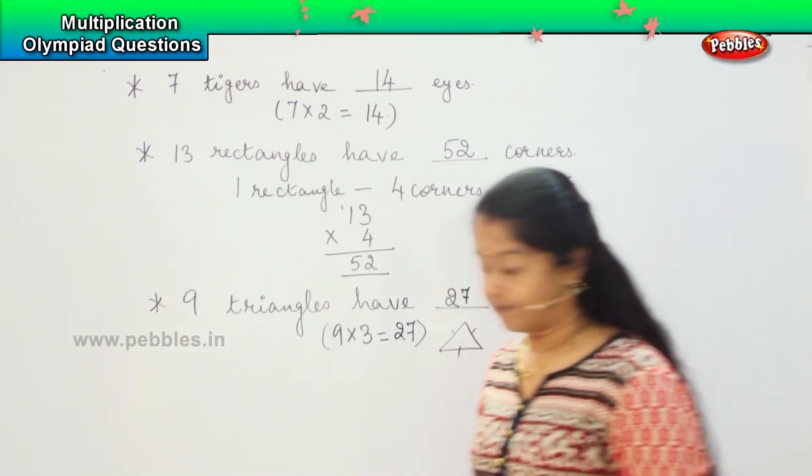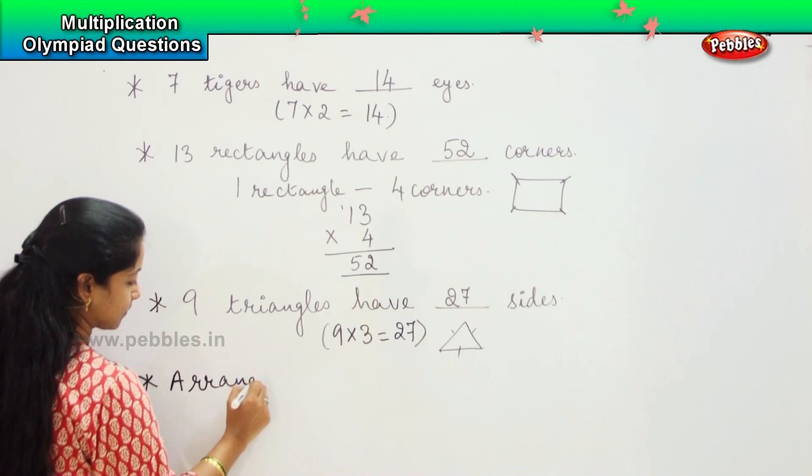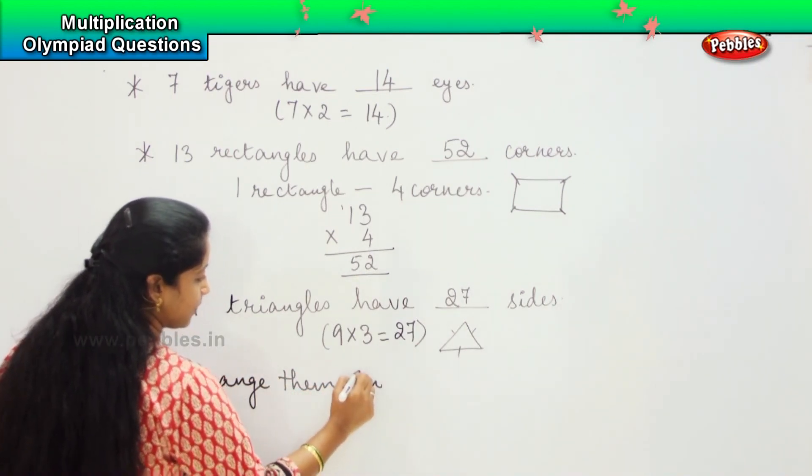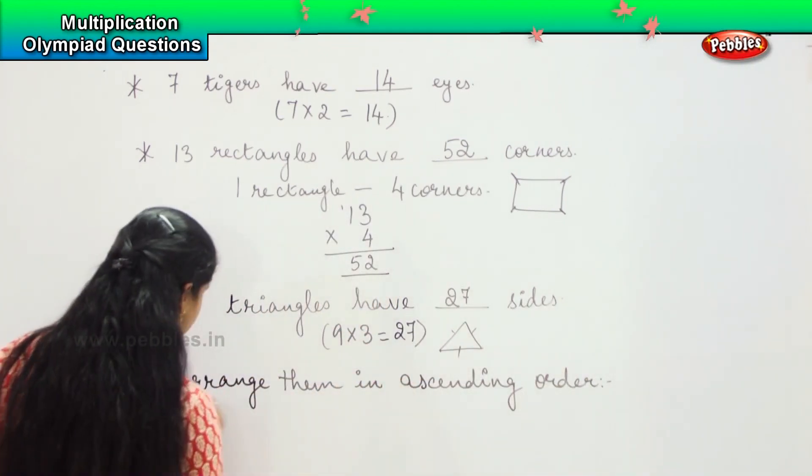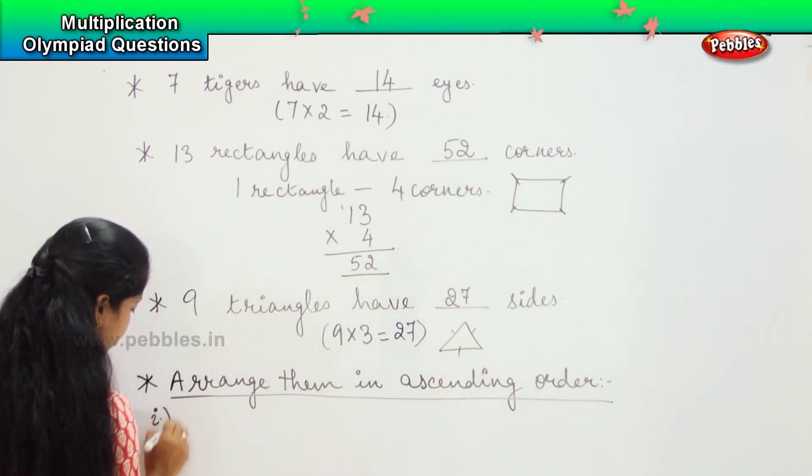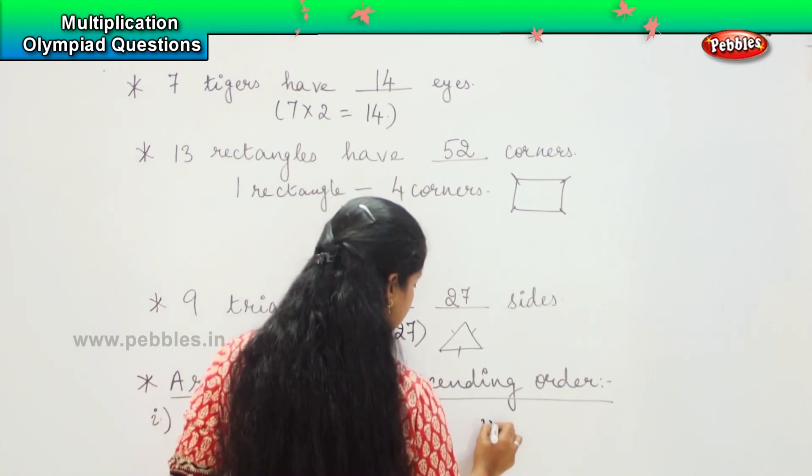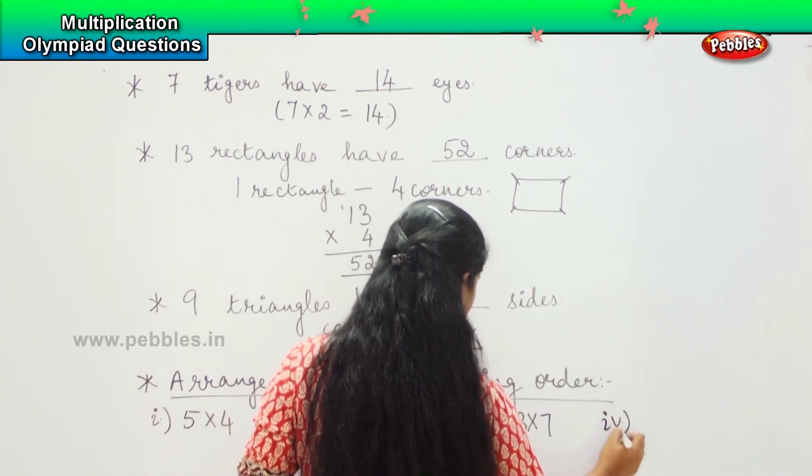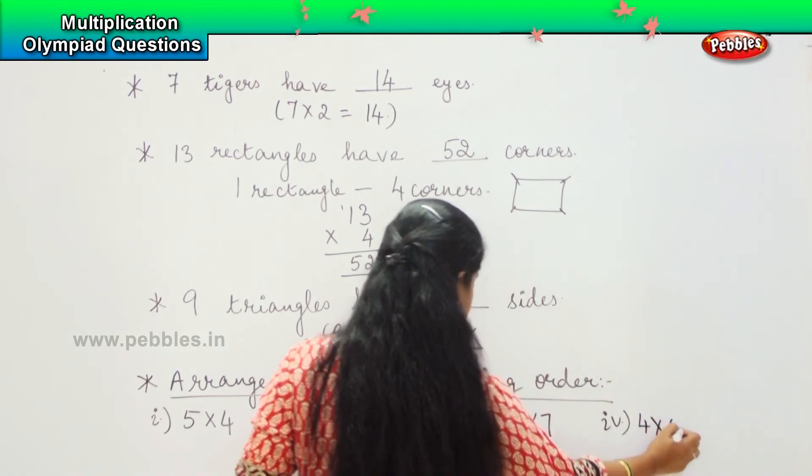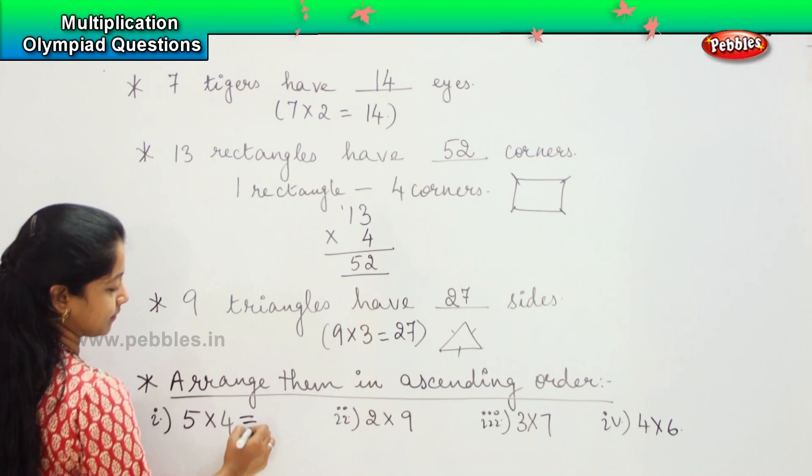The next one is you need to arrange these numbers. Arrange them in ascending order. First one is 5 into 4. Second one is 2 into 9. Third one is 3 into 7. And the fourth one is 4 into 6. So what we have to do? We need to find the product and then we need to arrange them in ascending order. 5 into 4 is how much? 20.